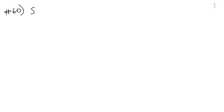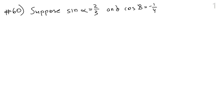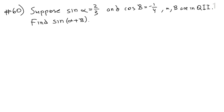For number 60, you are given that sine of some angle alpha is two-thirds and cosine of some other angle beta is negative one-fourth. You're also given that both alpha and beta are in quadrant two, and you're asked to find sine of alpha plus beta. The first thing you do is look at your formula sheet.